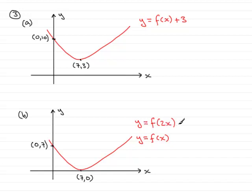What's this transformation going to do? Whenever you've got a number like this multiplied by x inside the bracket, this represents a stretch. In this case, a stretch of scale factor a half.